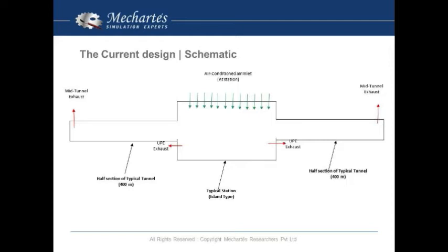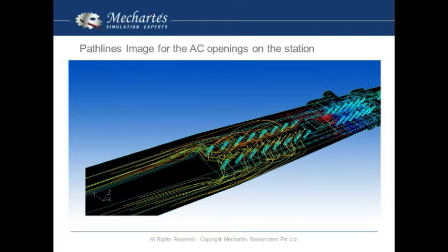If I draw a schematic, this is how the model was. This was the CFD model chosen for the project. We had modeled the station and, along with that, half tunnels on each side to represent the complete system. First, using Fluent, we did the path line and temperature simulation of the existing ventilation and cooling system to see how the flow is inside the station and the tunnel.